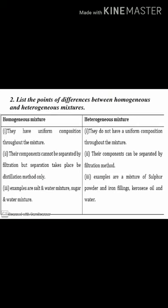Now we will discuss the differences between homogeneous and heterogeneous mixtures. Homogeneous mixtures have uniform composition throughout, like salt dissolved in water — the composition is the same throughout. Components of a homogeneous mixture cannot be separated by filtration but can be separated by distillation. In heterogeneous mixtures, the composition is not uniform, and components can be separated by filtration. Examples are sulfur powder with iron filings, and kerosene oil with water.